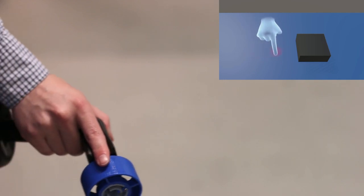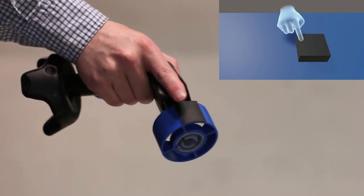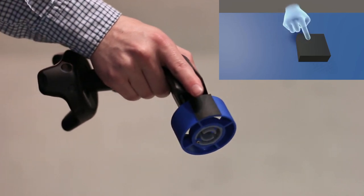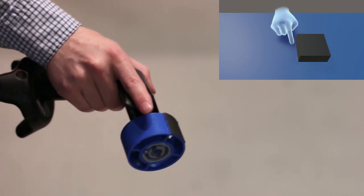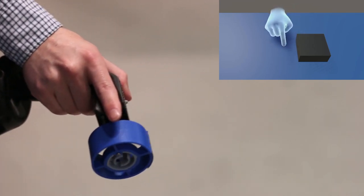Because our device is tracked, we can spatially register haptic elements with the environment. The motor spins the haptic wheel to ensure alignment between the features on the wheel and the virtual scene.